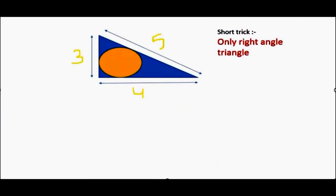So here is the shortcut that is only applicable to right-angled triangles. Radius of in-center is equal to base plus perpendicular minus hypotenuse, divided by 2.